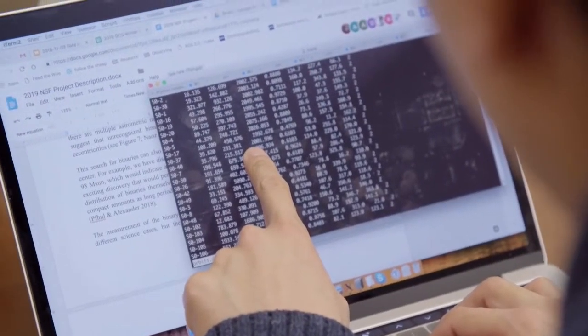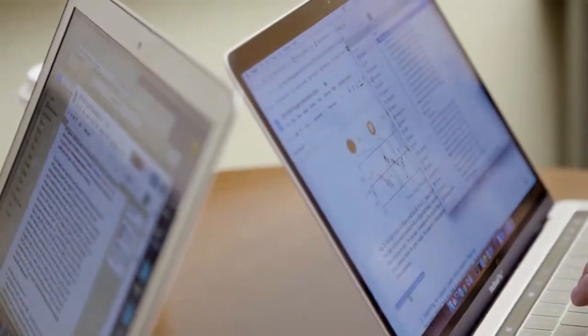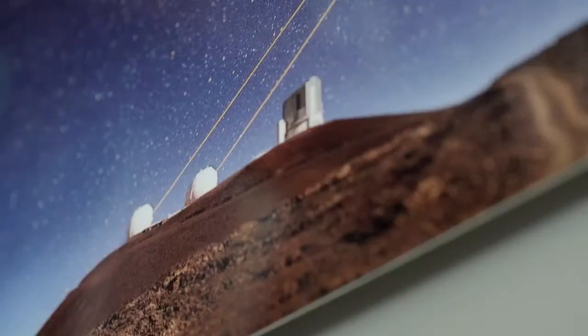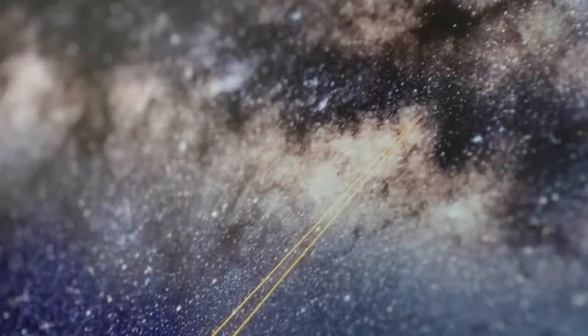We know that general relativity may not be a complete description of physics. And so in order to figure out where it's incomplete, you want to test it in regions that people haven't tested before. So people have tested general relativity on Earth, in the solar system, but never around a black hole that's four million times the mass of the sun.